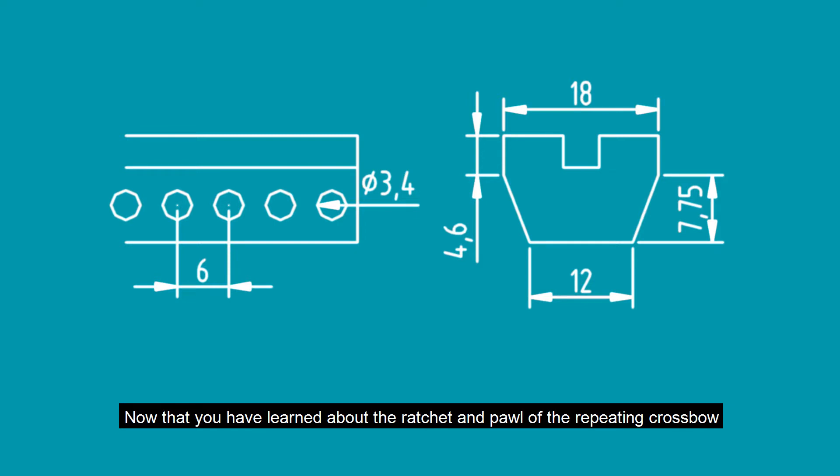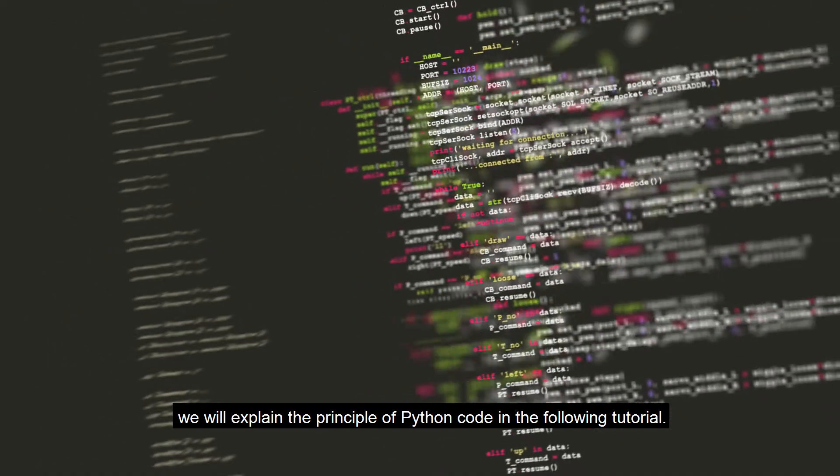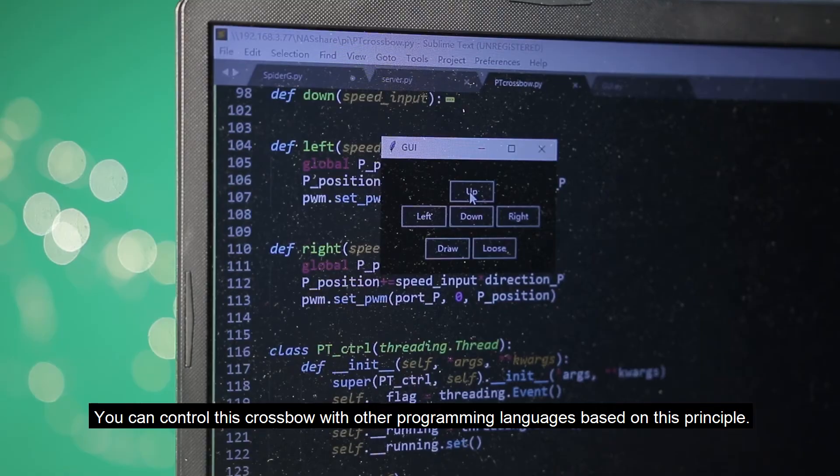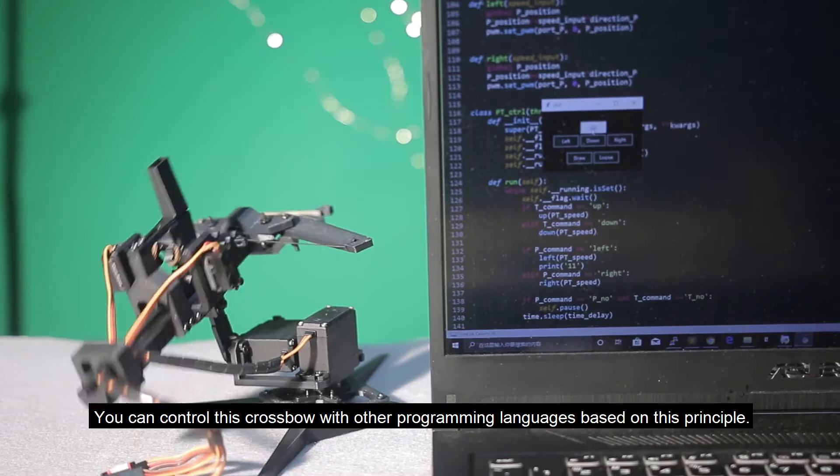Now that you have learned about the ratchet and pawl of the repeating crossbow, we will explain the principle of Python code in the following tutorial. You can control this crossbow with other programming languages based on this principle.